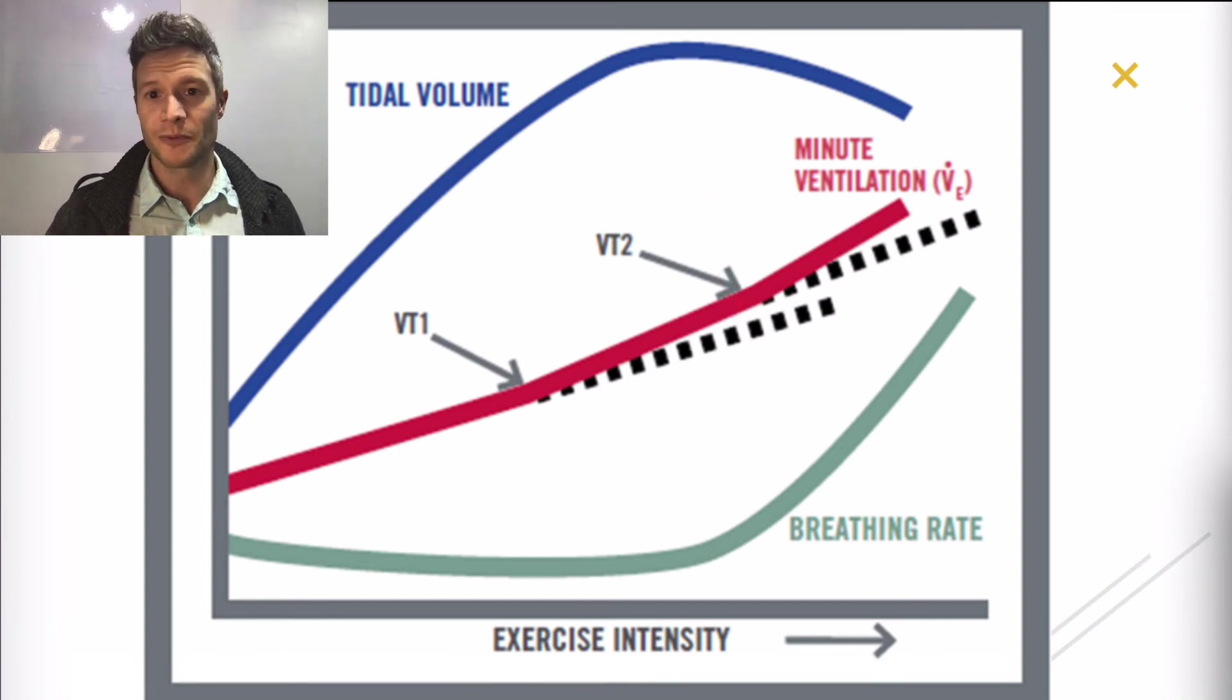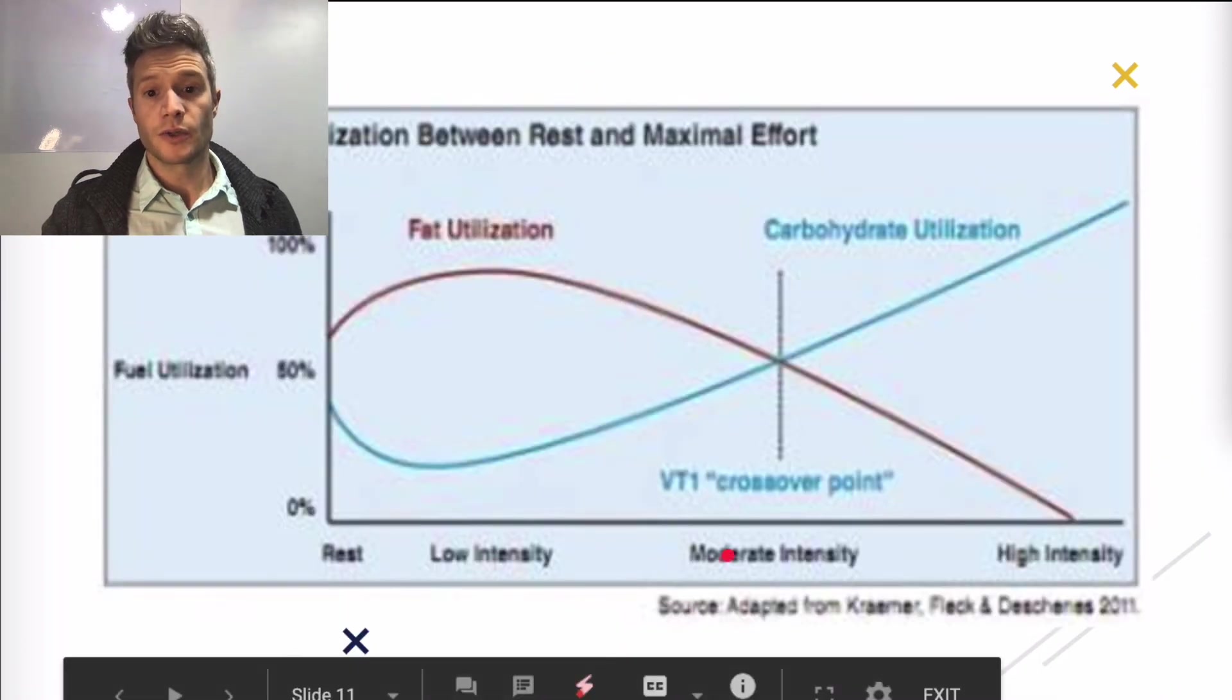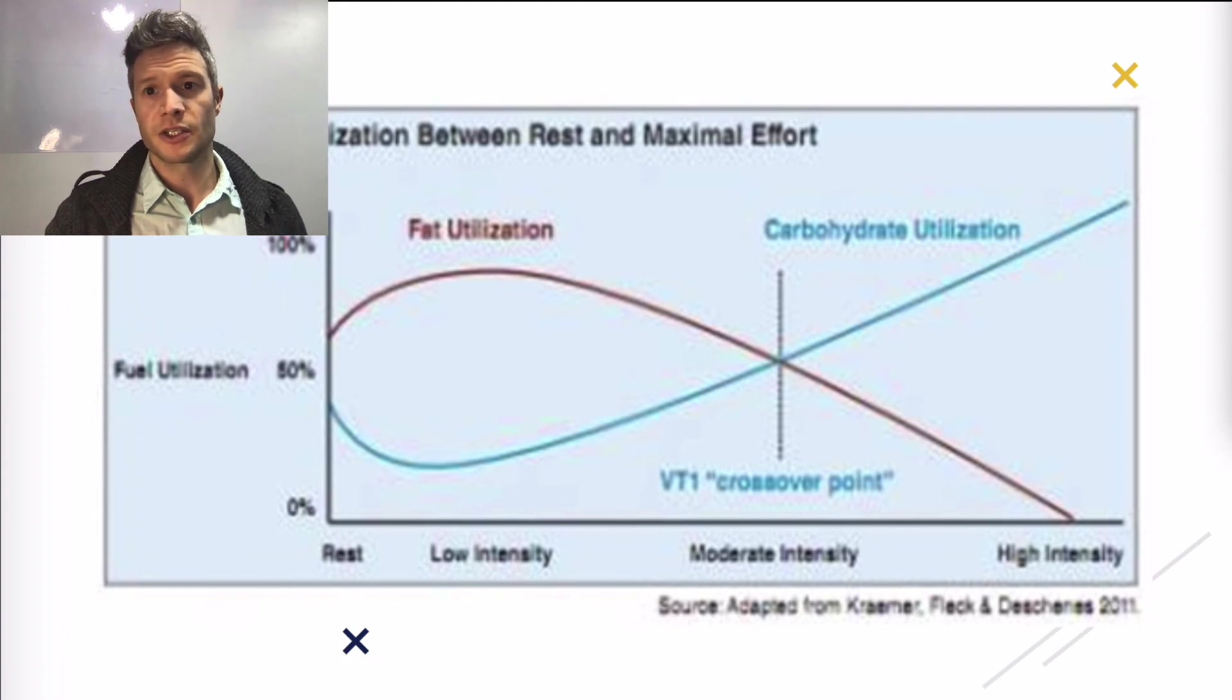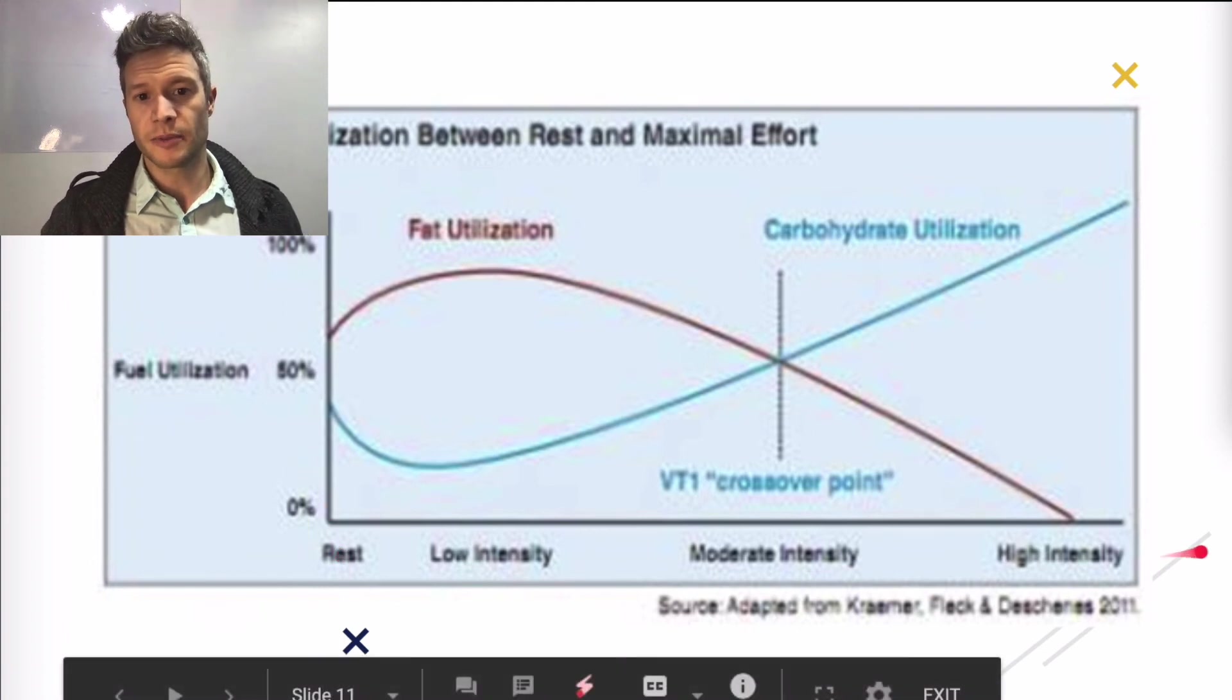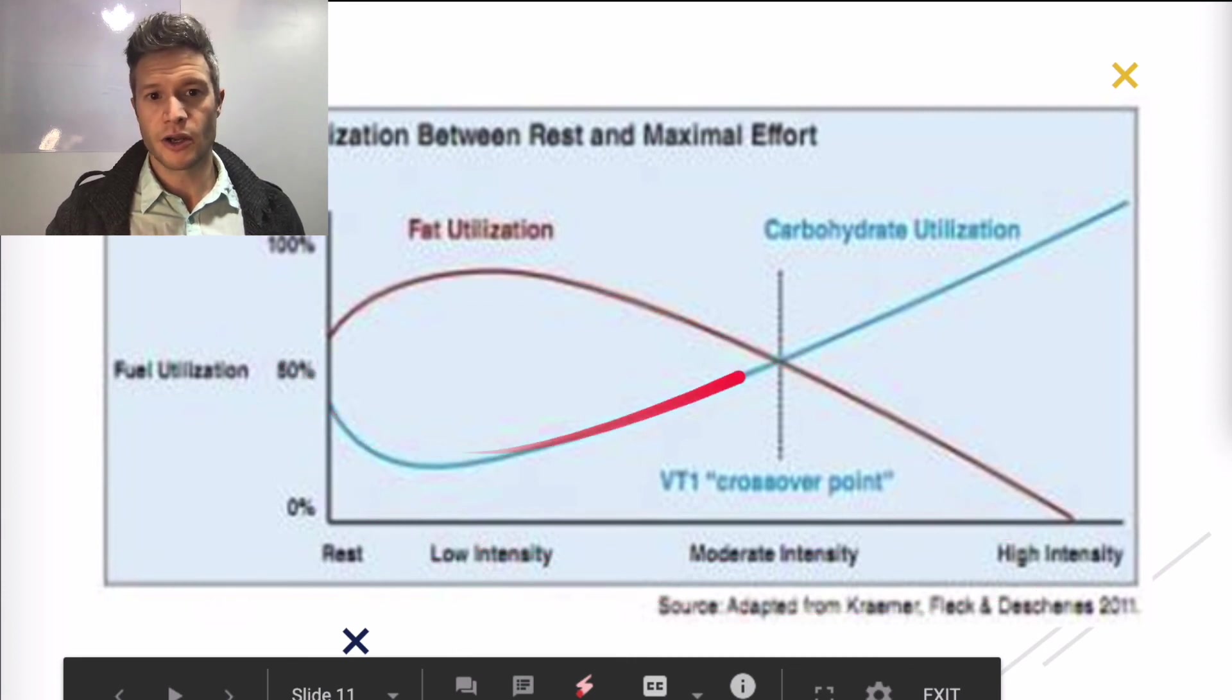Why is this important? We'll get to how to apply it for training, but it gives us a really cool indication, a really good trick at figuring out what fuels are being used. So let's get ourselves situated here. We've got fuel utilization, percentage of, from rest up to higher intensity exercise, fat utilization, carbohydrate utilization, and this thing at VT1 called a crossover point.